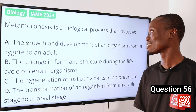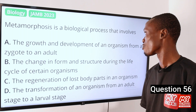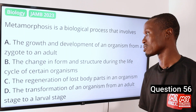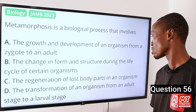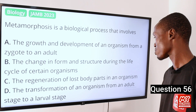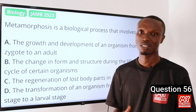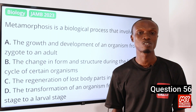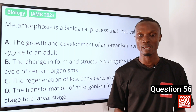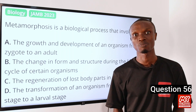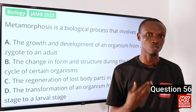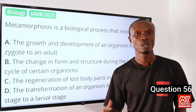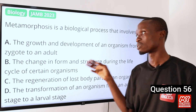Question 56. Metamorphosis is a biological process that involves: A. The growth and development of an organism from a zygote to an adult. B. The change in form and structure during the life cycle of certain organisms. C. The regeneration of lost body parts in an organism. D. The transformation of an organism from an adult stage to a larval stage. Metamorphosis is defined as a dramatic change in body form and structure as an organism progresses through different stages in its life cycle, which may include egg, larval, pupal, and adult stages. Metamorphosis is commonly observed in some organisms such as insects — e.g. beetles and butterflies — and amphibians, e.g. frogs and salamanders. So that makes option B the correct option.